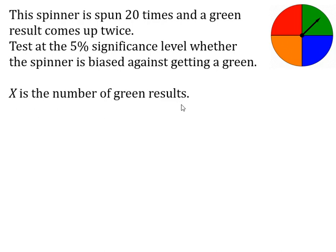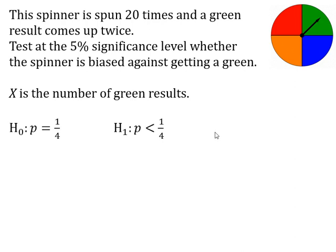We always have to write down the hypotheses. The null hypothesis is the default position, so we assume the spinner is fair — the probability of getting a green is one quarter. What we're testing is whether it's biased against getting a green, so our alternative hypothesis is that the probability of getting a green is less than a quarter. So here are our two hypotheses.